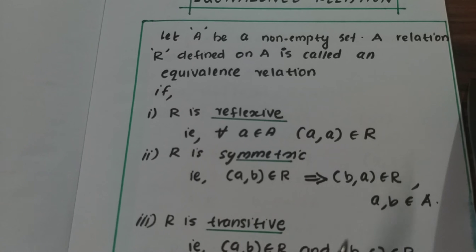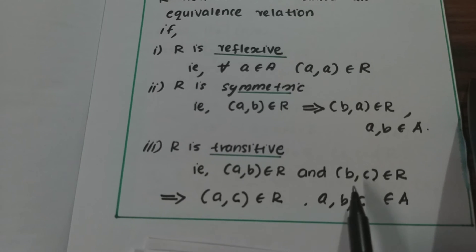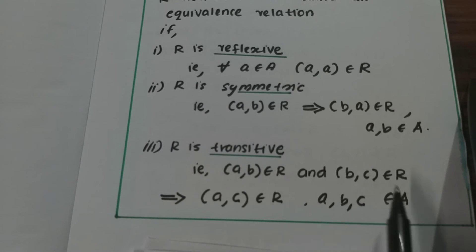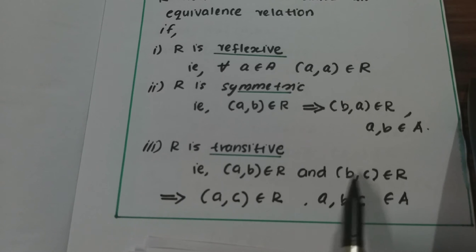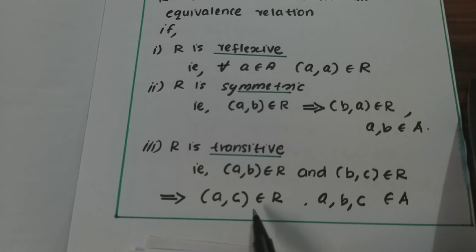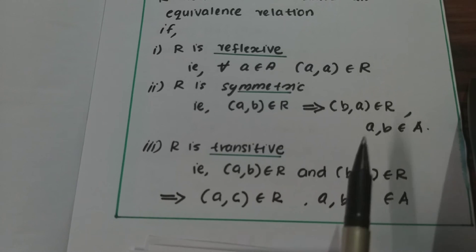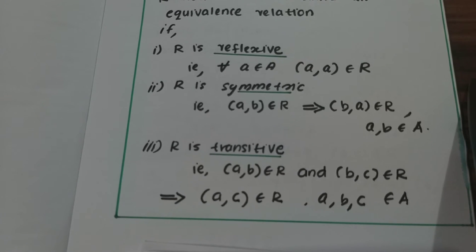The last property is transitive. Transitive means: if (a, b) belongs to R and (b, c) belongs to R, then (a, c) must also belong to R. So taking the first and last elements, (a, c) belongs to R. If R satisfies all these properties, then R is an equivalence relation.